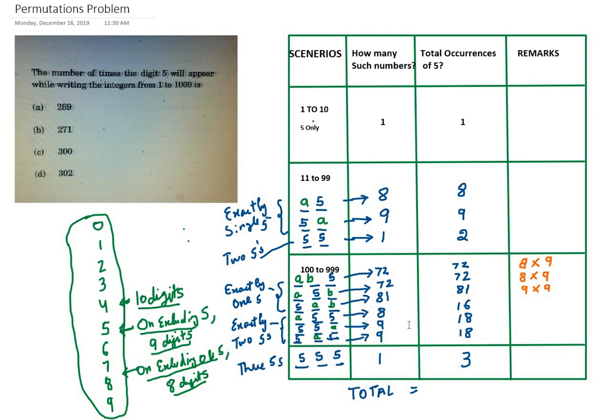Now we will move on to the next major scenario where we are having exactly two fives. Three such cases are there, as you can see in the diagram. Units and tens places are 5, tens and hundred places are both 5, and hundred place and units place are 5. The other numbers can vary. In the first case we cannot have 0 or 5, so we are left with 8 such possibilities. So 8 such numbers can be there, but here each number is having two fives, so the total occurrences of 5 will become 16.